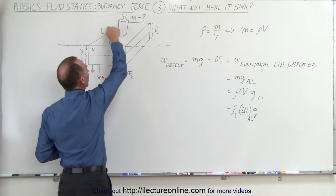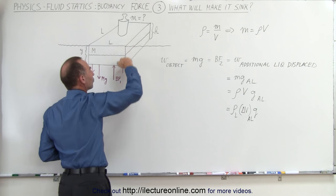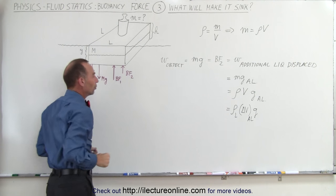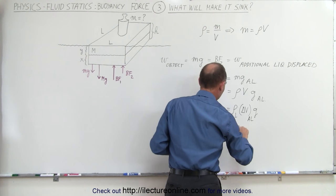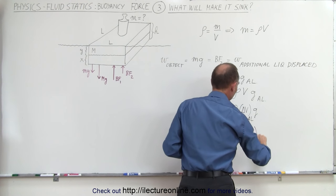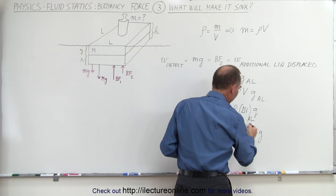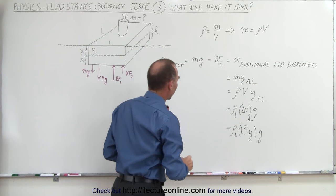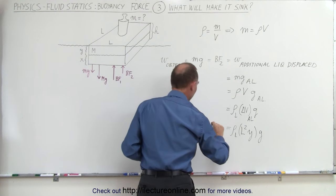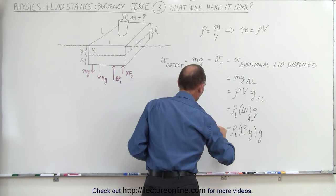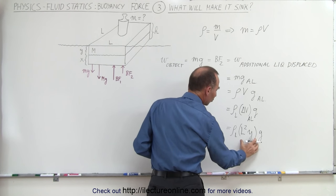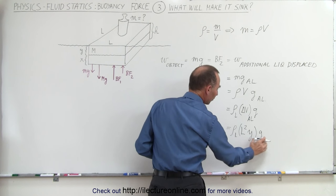The size of the cube is l by l, and h for height. The portion that's above the surface before we put the weight on it is equal to y. So this can be written as the density of the liquid times l² times y times g. This is the additional volume displaced, which must equal buoyancy force 2, which equals the weight of the object. So mg equals the density of the liquid times the additional volume pushed below the surface times g.